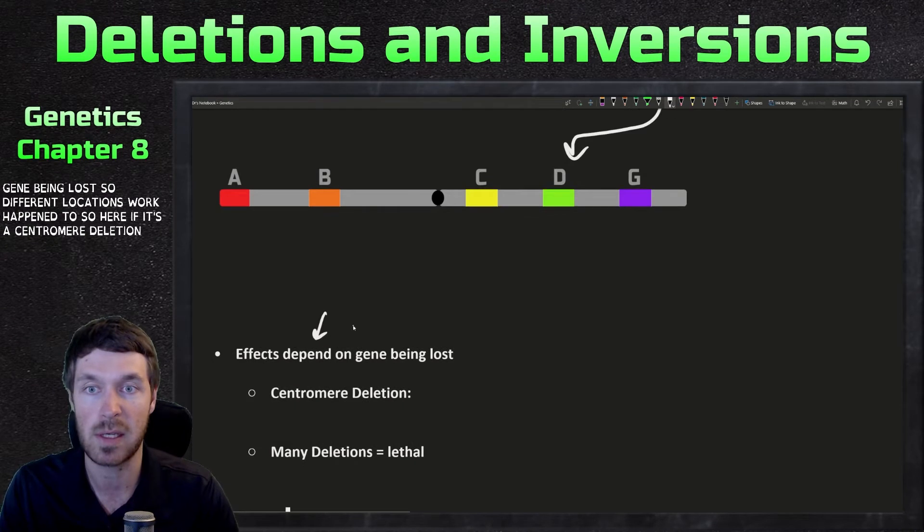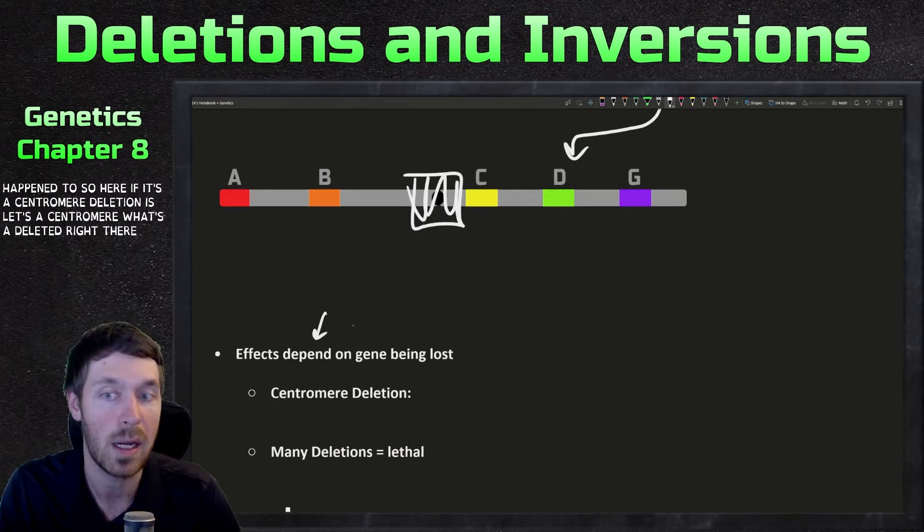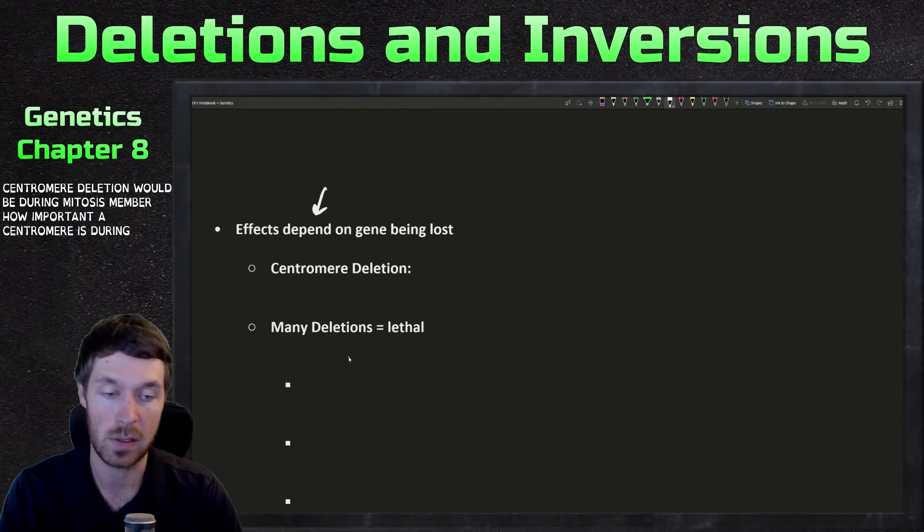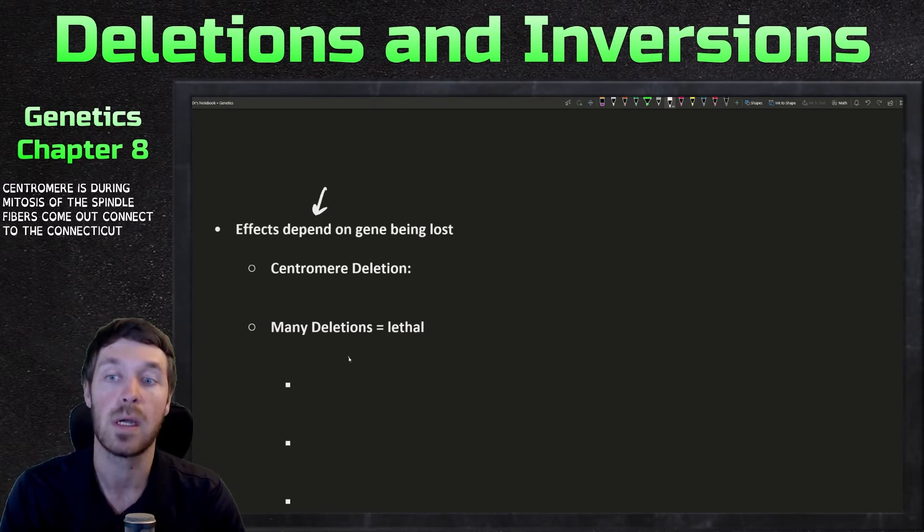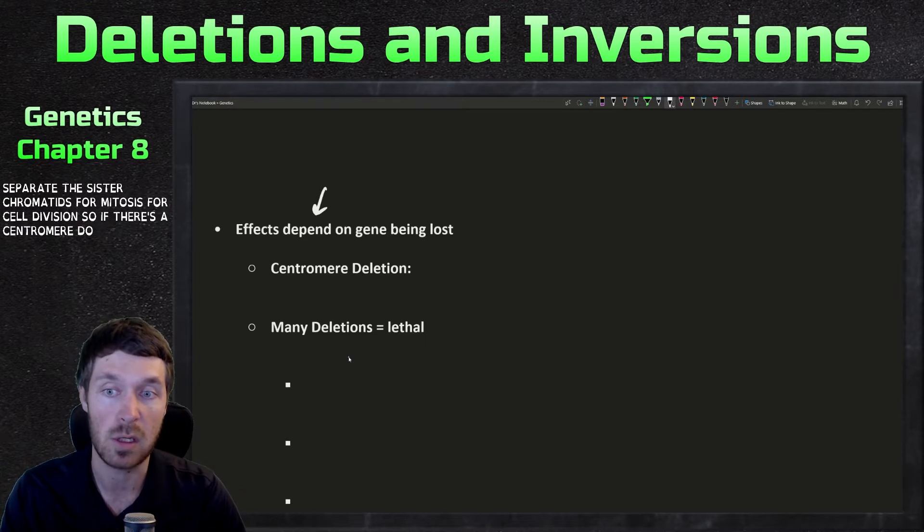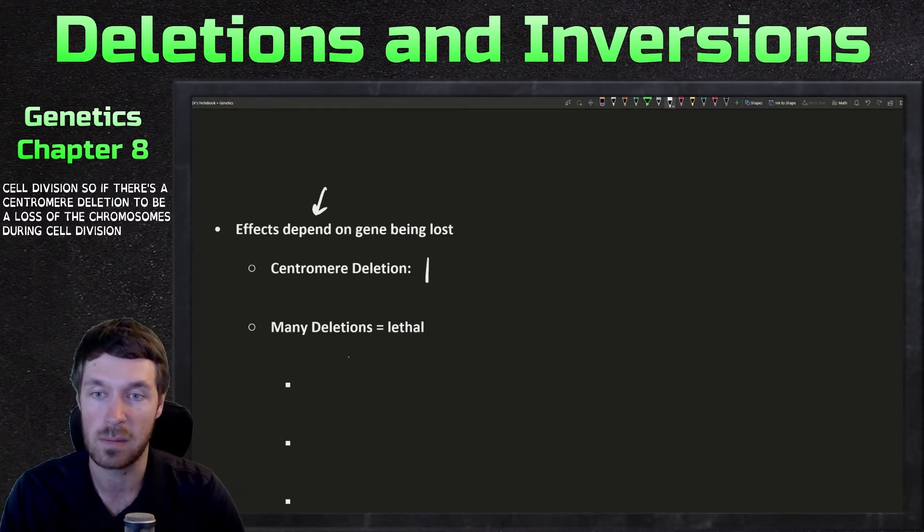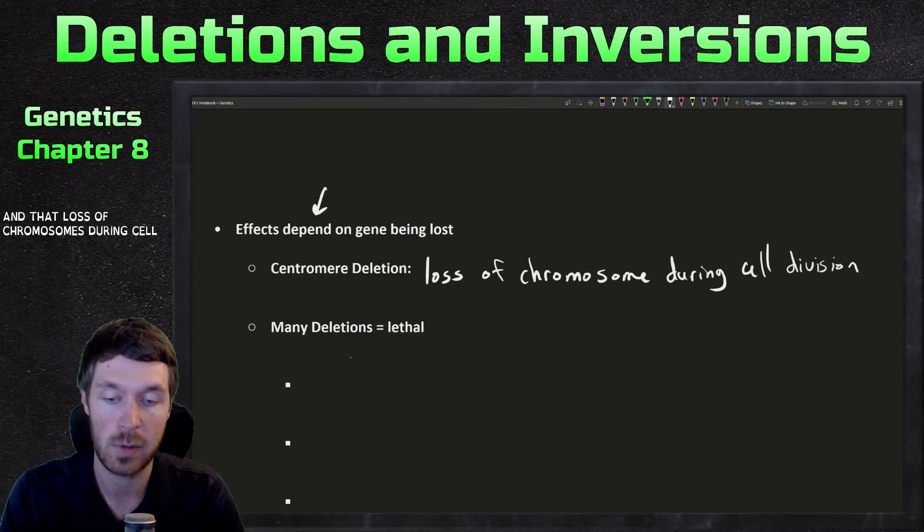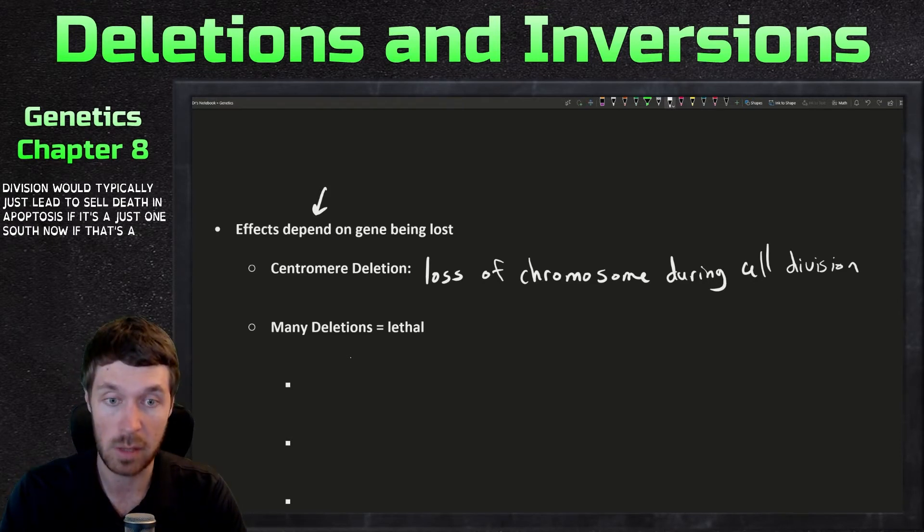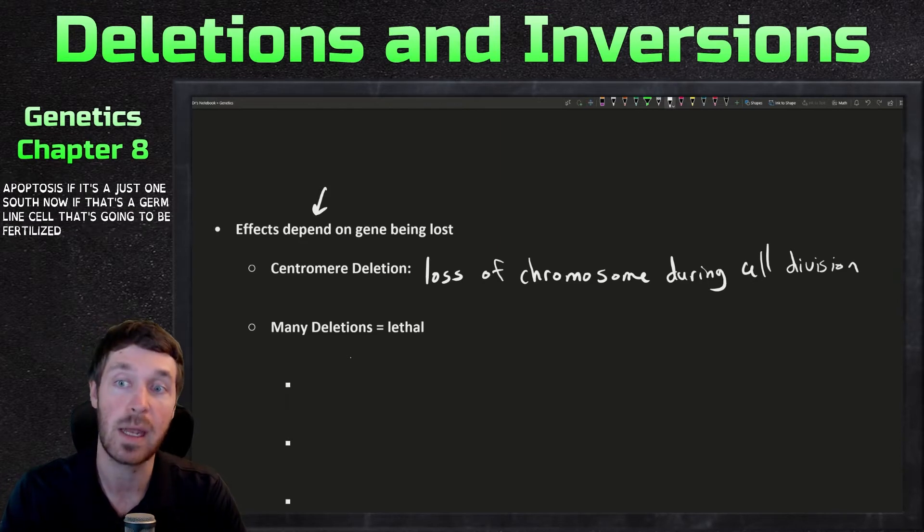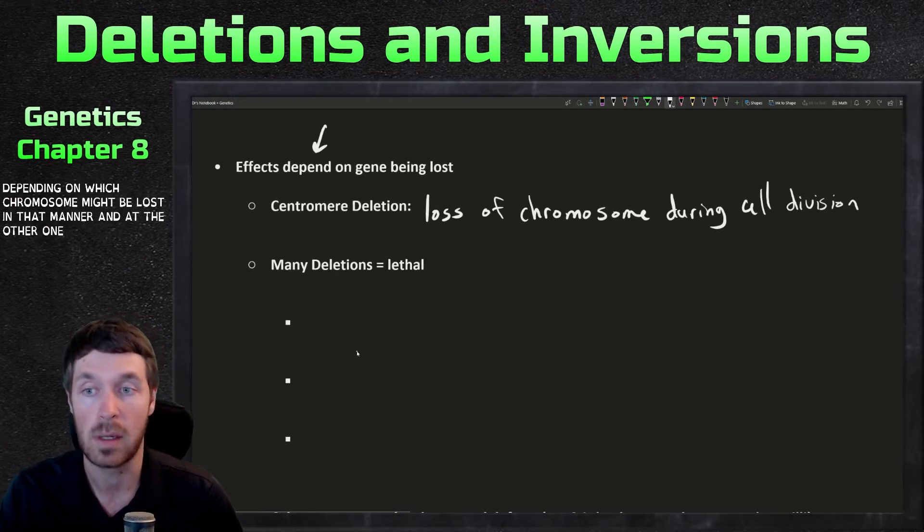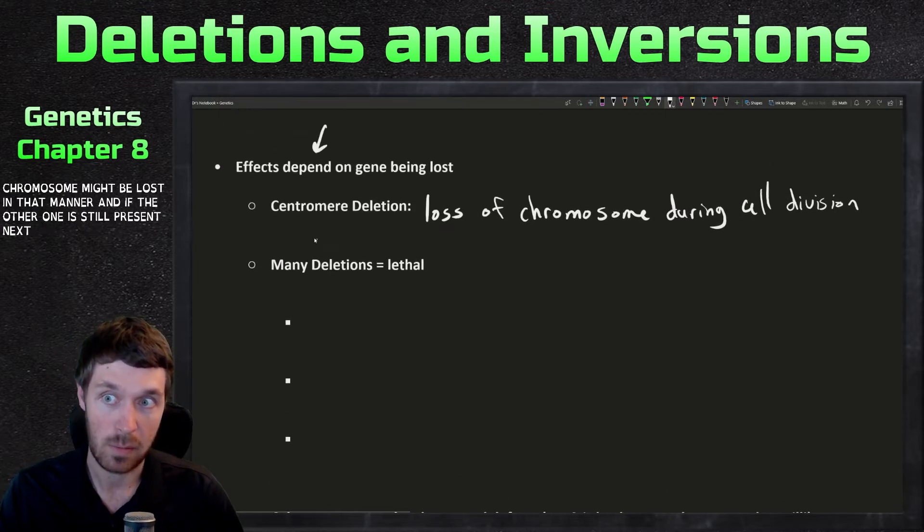So if we're looking at the effects, it highly depends on that gene being lost. So different locations where it could happen too. So here, if there's a centromere deletion, so let's say this centromere was deleted right there. What would that cause? The problem with a centromere deletion would be during mitosis. Remember how important the centromere is during mitosis? So the spindle fibers come out, connect to the kinetochore, and then separate the sister chromatids from mitosis for cell division. So if there's a centromere deletion, there'd be a loss of the chromosome during cell division.